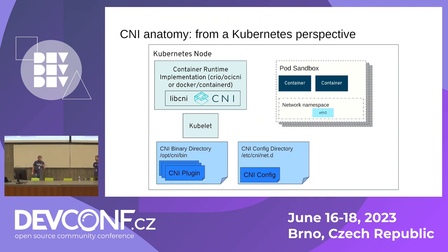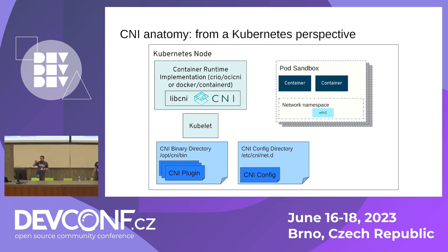Currently, a CNI plugin is just a binary which speaks JSON, and it's a binary that is being run by the kubelet or a container runtime — a CRI. What we want out of that is a network namespace with an interface or more. If you're familiar with OpenStack, you can get a VM with whatever amount of subnets and interfaces you'd like, but you can't do that natively in Kubernetes.